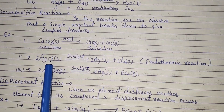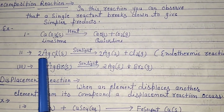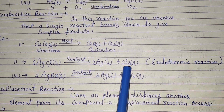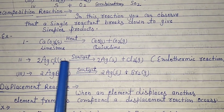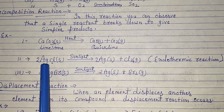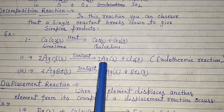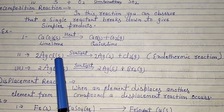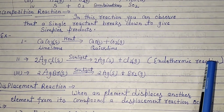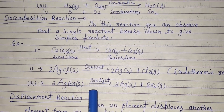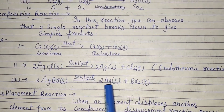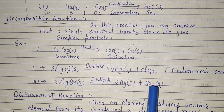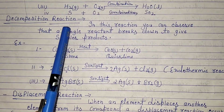Next example: silver chloride in the presence of sunlight reacts — silver chloride is a single reactant that breaks down into different products, turning gray in color due to the presence of sunlight. Here, heat energy is absorbed, so this is an endothermic reaction. Next example: silver bromide in the presence of sunlight breaks down into silver plus bromine — a single reactant breaks into smaller parts, so it is a decomposition reaction.